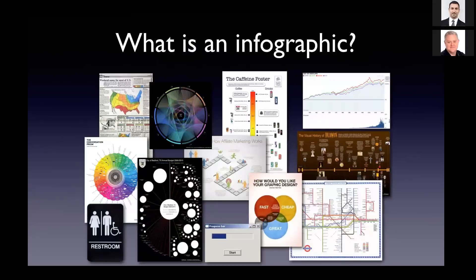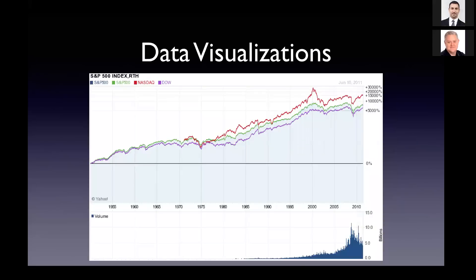When a client calls up and says they want an infographic project, the word infographic really means many different things to different people. So I need to make a distinction — and I do this in the book as well — between what's a data visualization and an infographic. This is a data visualization: a chart. There are more than 80,000 data points represented here in this line chart of different stock market indexes. This is a visual representation of the data, but it's up to you, the audience, to look at this and figure out what's important. Here's a visual representation of the data — figure out what you can learn from it.